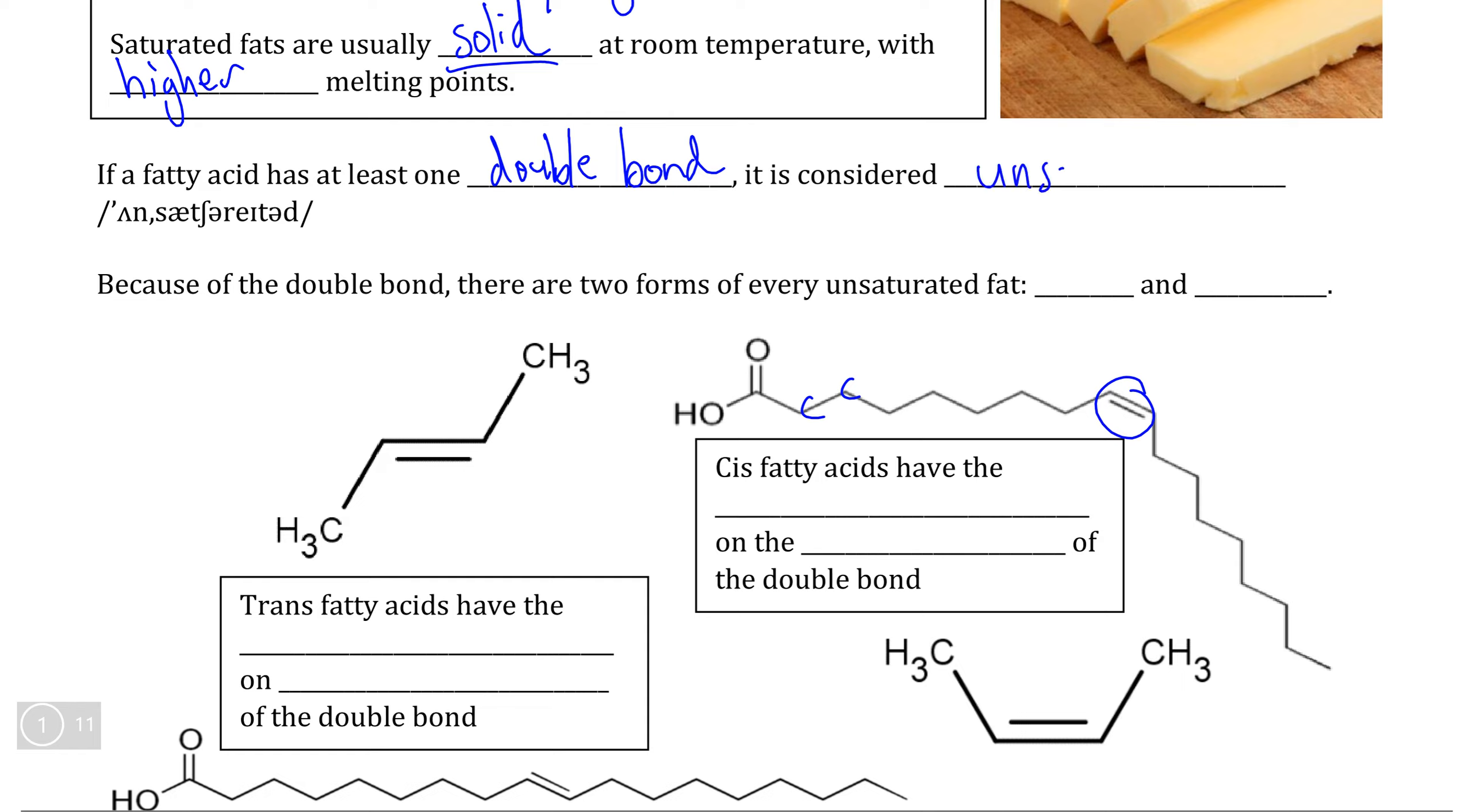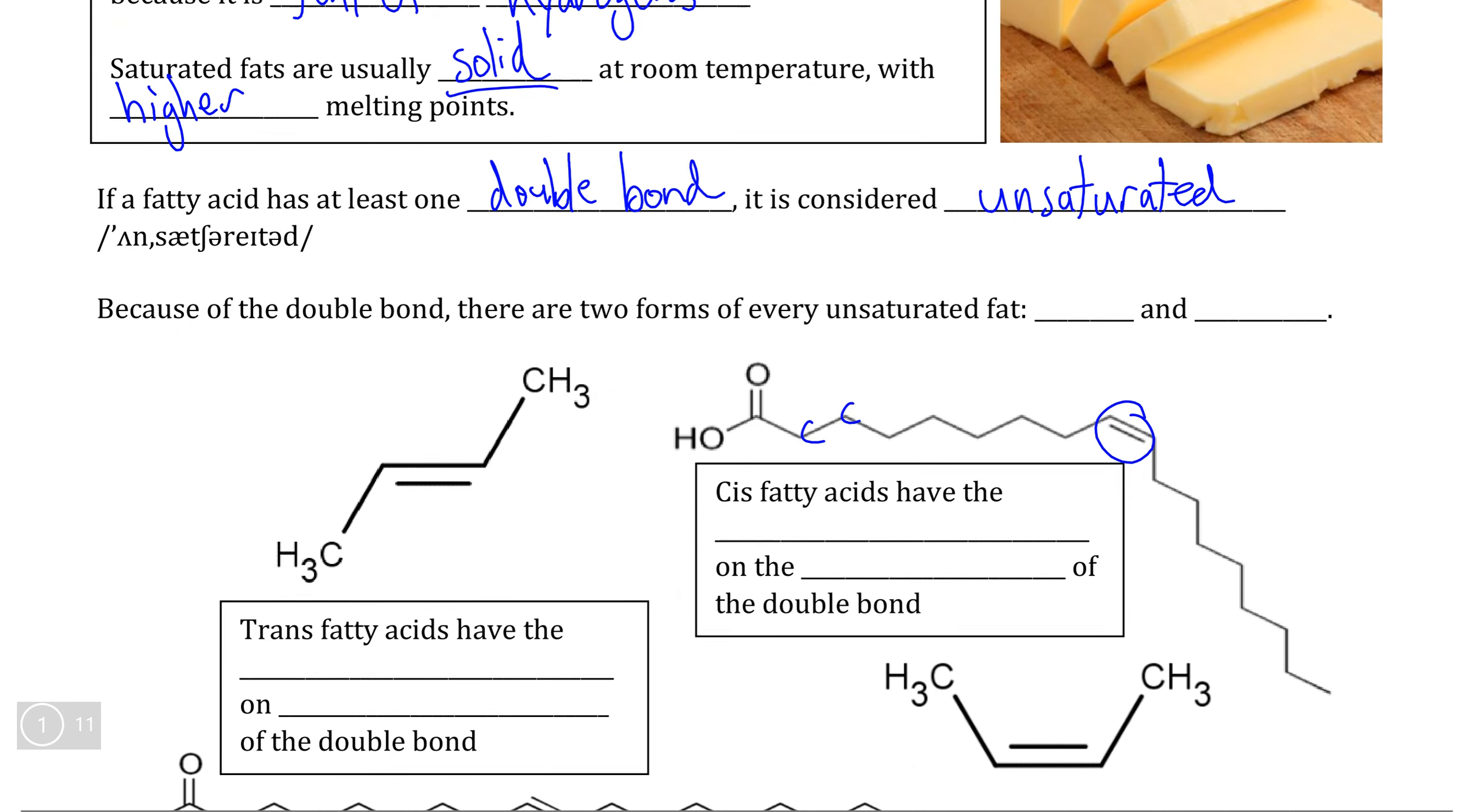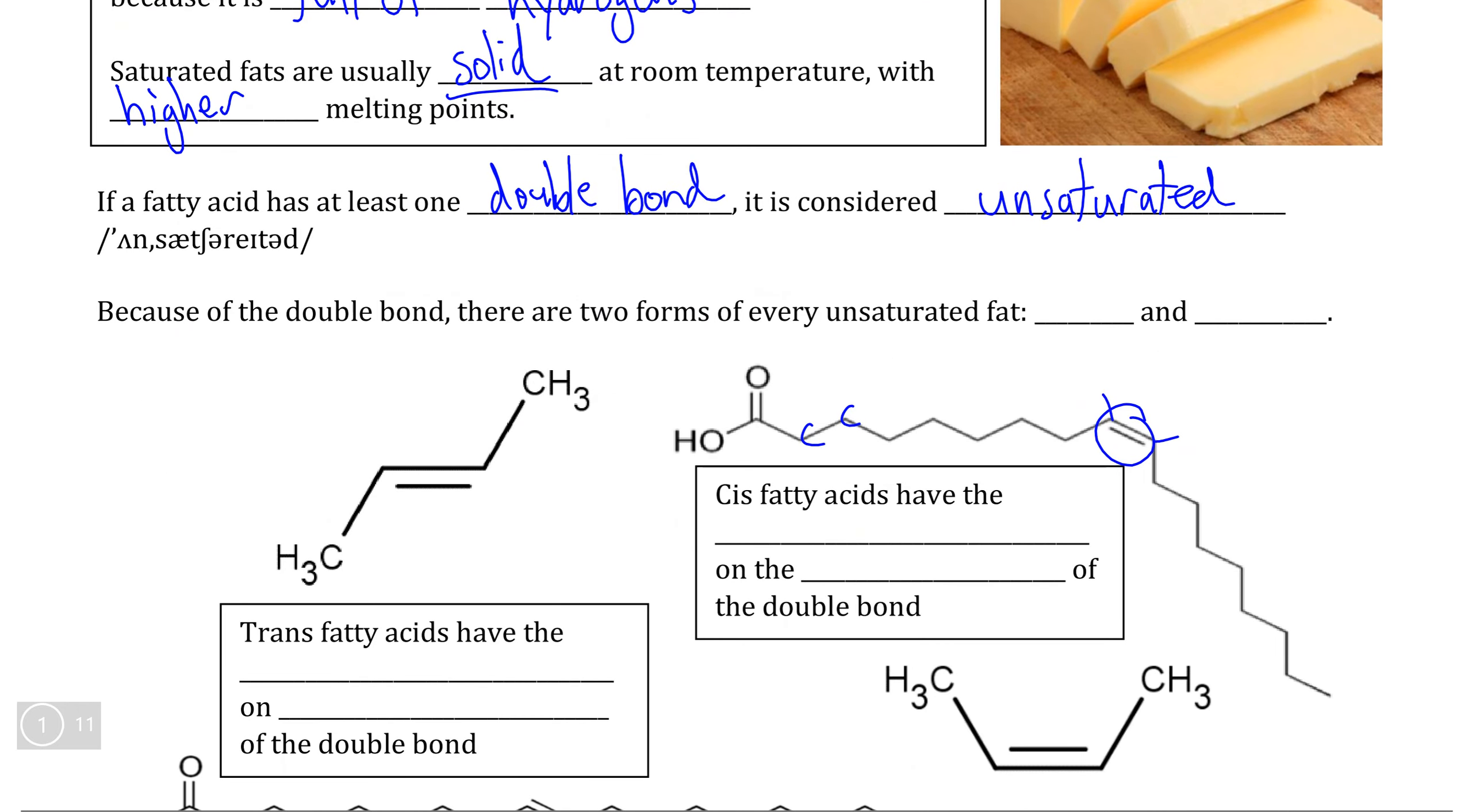This is what we consider an unsaturated fatty acid because unlike the saturated fatty acid, that means that the location of this double bond, specifically the carbons, can no longer hold the maximum number of hydrogens within that fatty acid chain. And therefore, we say that unsaturated fatty acids are not full of hydrogen.